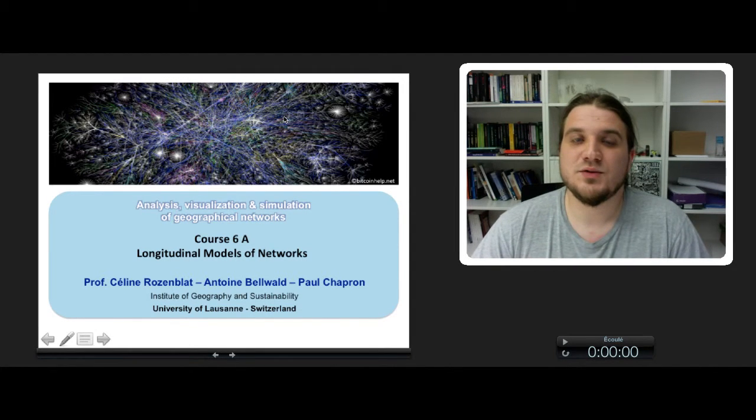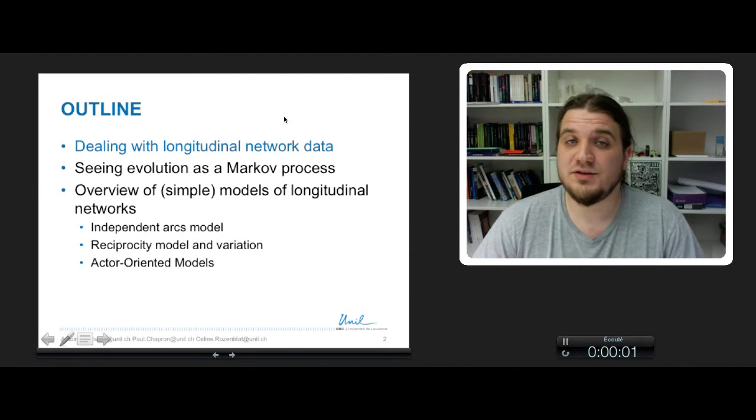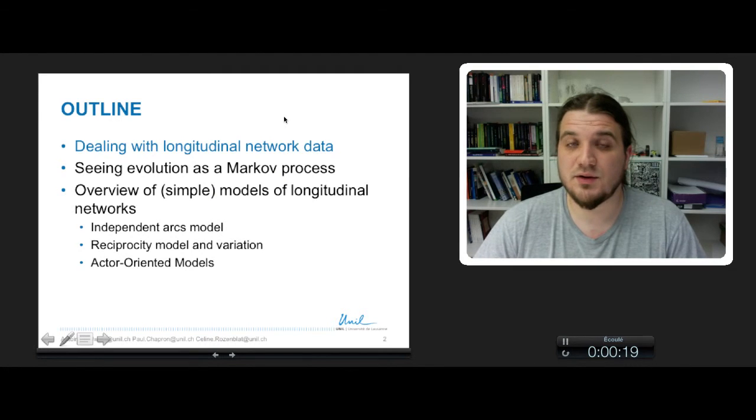Hi everyone, welcome to course 6a on Longitudinal Model of Networks. Longitudinal Model of Networks is model of networks evolution. It occurs when you have temporal data on the same networks and you want to find what describes the evolution process occurring in these networks. This is the outline of the course.